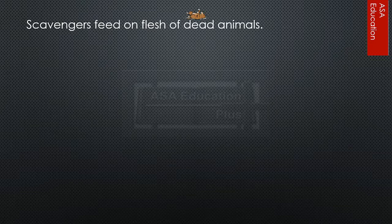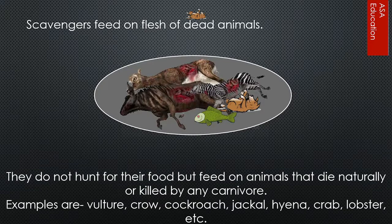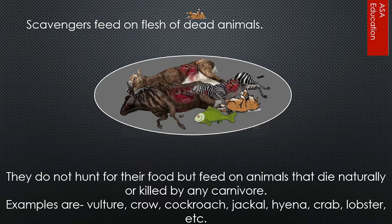Scavengers feed on the flesh of dead animals. They do not hunt for their food, but feed on animals that die naturally or are killed by any carnivore. Examples are vulture, crow, cockroach, jackal, hyena, crab, lobster, etc.